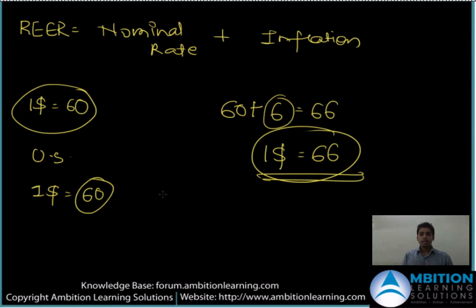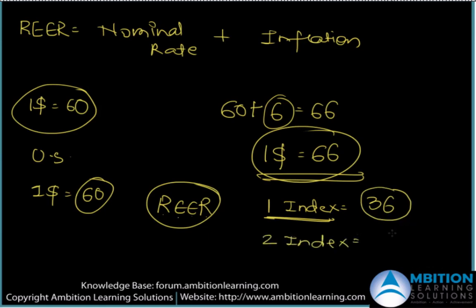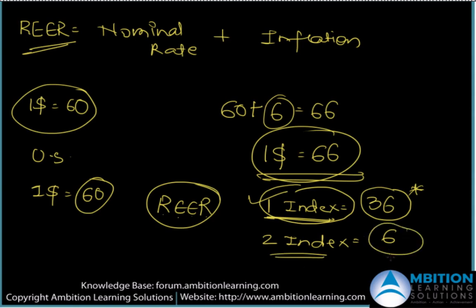Now it is not just a concept — in India the government actually runs a proper index. There are two indices which monitor the real effective exchange rate in India. The first index is pegged against 36 currencies, similar to how you have a dollar index. The second index is monitored against 6 currencies. So we are effectively monitoring the real effective exchange rate of the Indian rupee versus 36 currencies and versus 6 currencies.